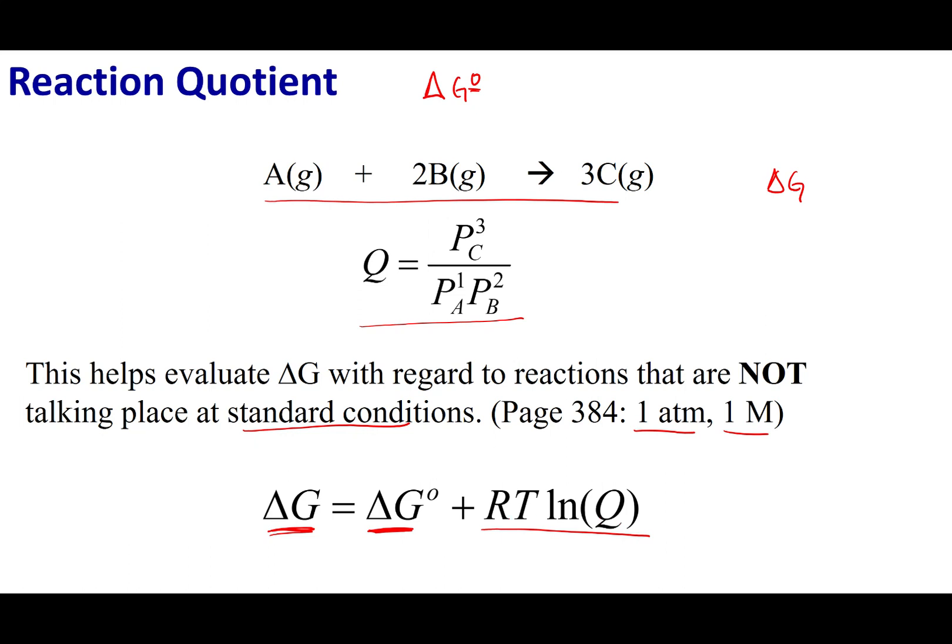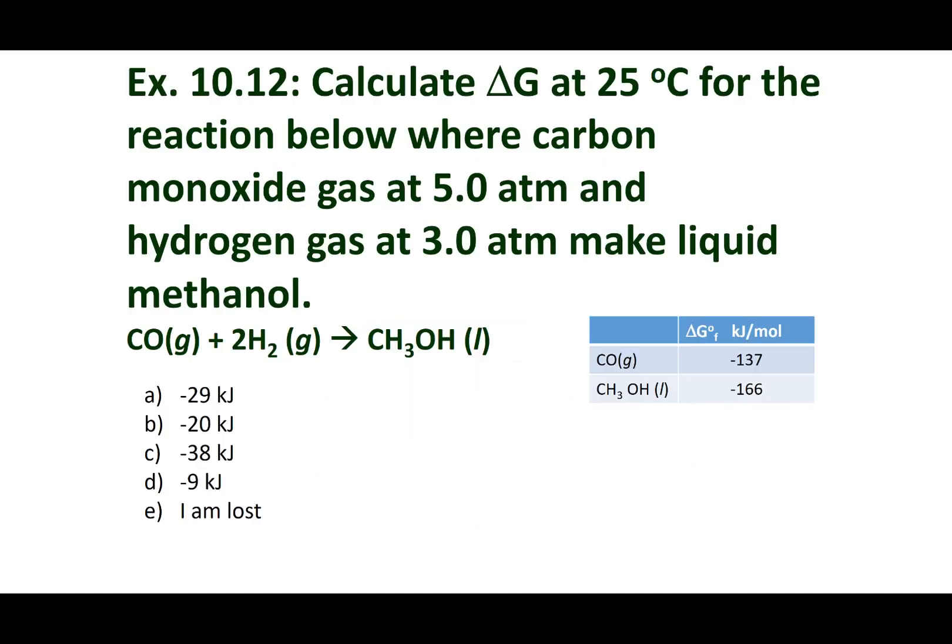where R is our gas constant, T is the temperature in Kelvin, and then LN, the natural log of Q, our reaction quotient. So the idea here is this is kind of a fudge factor. It tells you how far apart delta G is from delta G naught. This thing in the box helps you go away from standard conditions. So with that said, let's go ahead and practice this quiz question out.